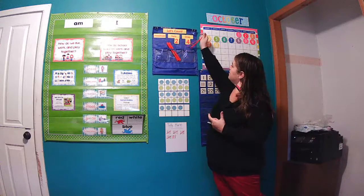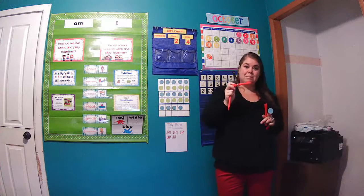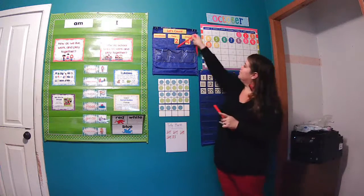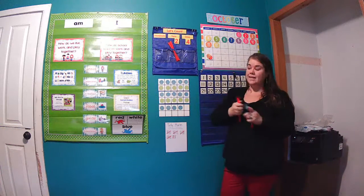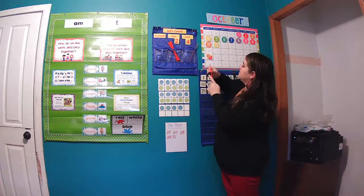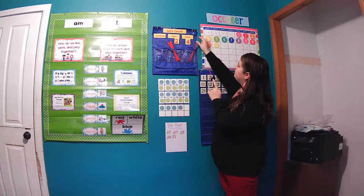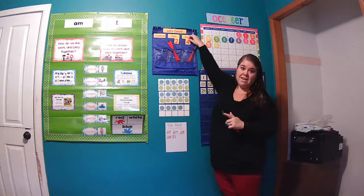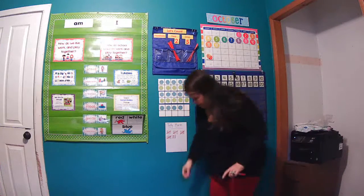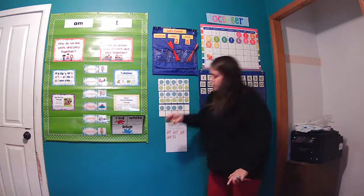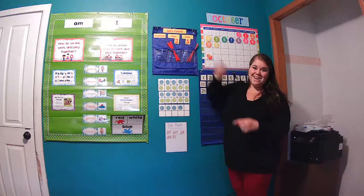Let's add another straw to our mix and we will count those together. So each bundle is a bundle of 10. Here we have 10. Two bundles is 20, 21, 22, 23, 24, and one more makes 25. So we'll switch this four to a five. Pick up our six for tomorrow. So 25 — a two, and a five.